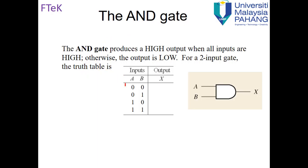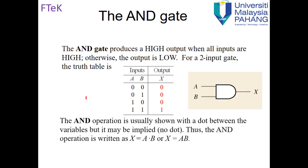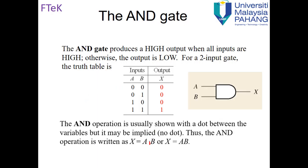The next gate is the AND gate. The AND gate produces a high output only when all inputs are high. Looking at the truth table: zero AND zero is zero, zero AND one is zero, one AND zero is zero, and only one AND one gives output one. AND is represented by multiplication or dot notation, so X equals A·B, or simply X equals AB.